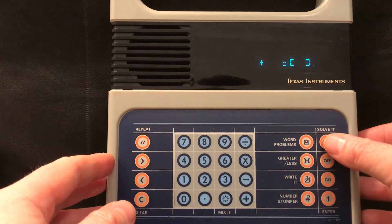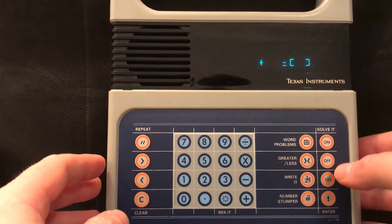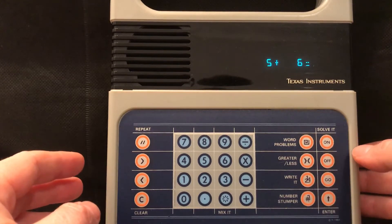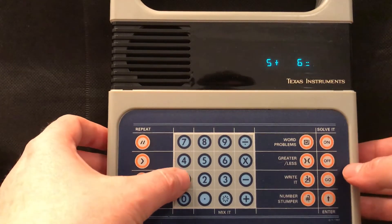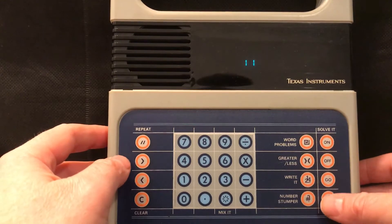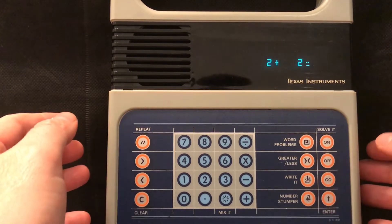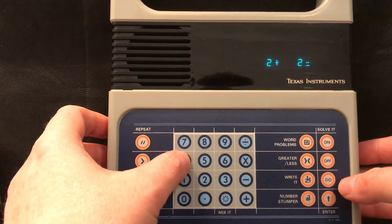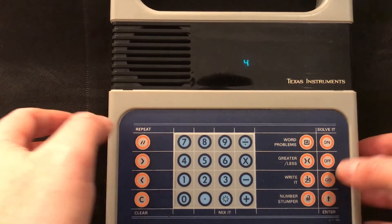So this is the default mode, Solve It, and if I press go it's on level one. Five plus six is what? So five plus six is eleven so you type in eleven and hit enter. That's right. Two plus two is what? So it's told me I'm correct. Two plus two is four.